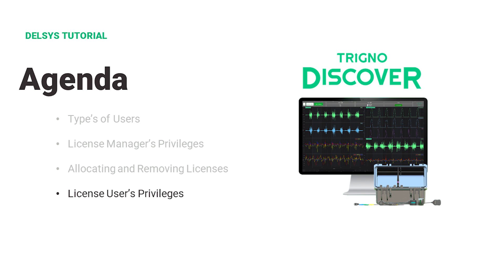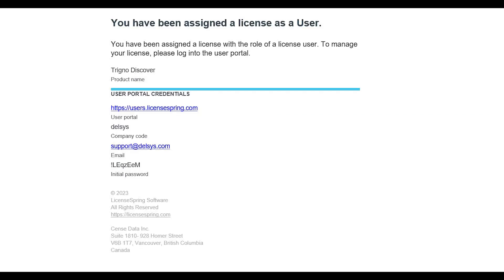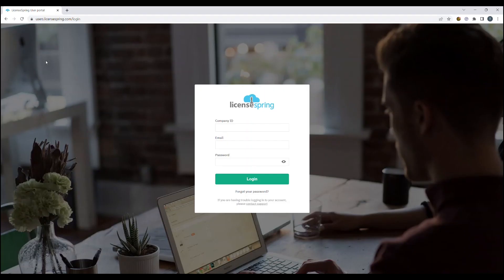We will now cover all the privileges available to a license user. A license user will be able to use their own email address to log in to Trino Discover once added by a license manager. When a license user has been assigned a license from a license manager, they will receive an automated email sent to the email address provided to the license manager. This automated email will contain your login credentials.